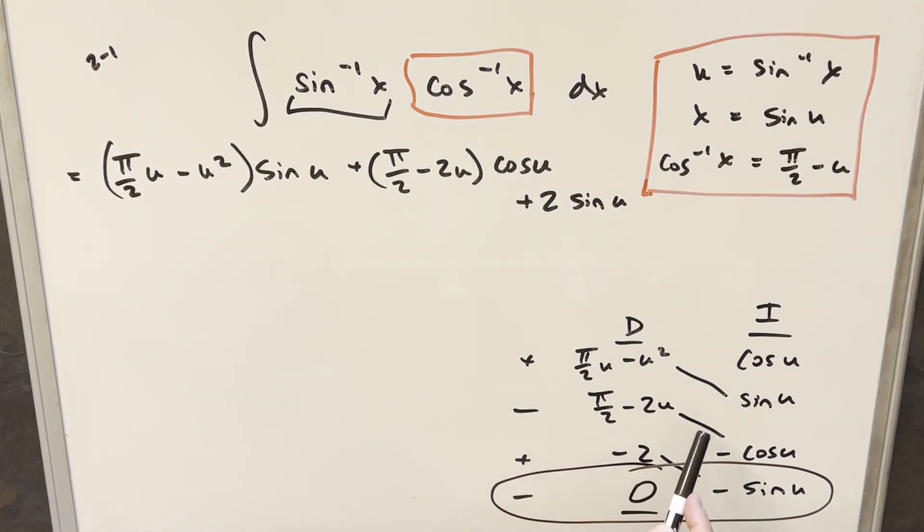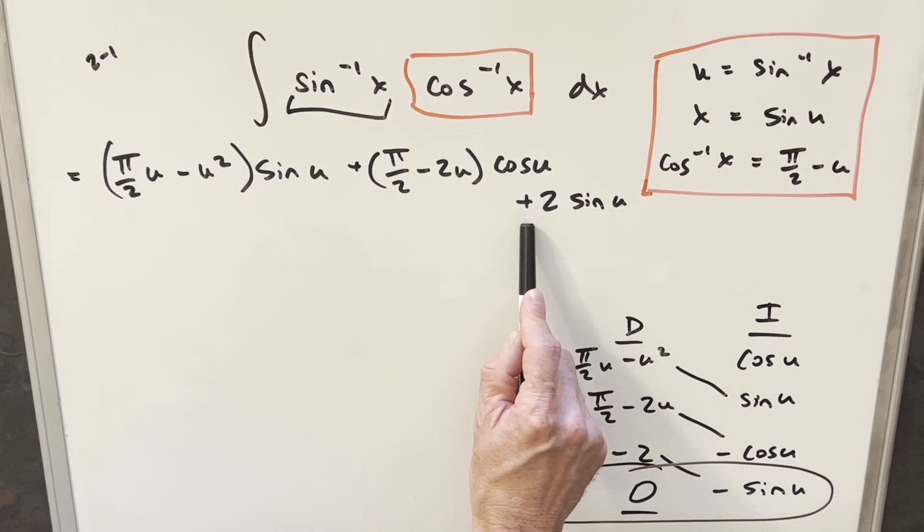So all I've done here is I've just copied down these diagonals directly from my table over here, from my DI table over here on the right. Just noticing a couple of these terms, we had minus and a minus. That gave me a plus. Minus times minus gives me a plus here.